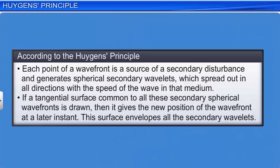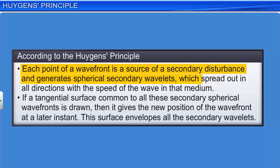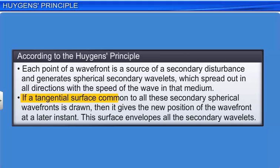According to Huygens' principle, each point of a wave front is a source of a secondary disturbance and generates spherical secondary wavelets, which spread out in all directions with the speed of the wave in that medium. If a tangential surface common to all these secondary spherical wave fronts is drawn, then it gives the new position of the wave front at a later instant. This surface envelopes all the secondary wavelets.